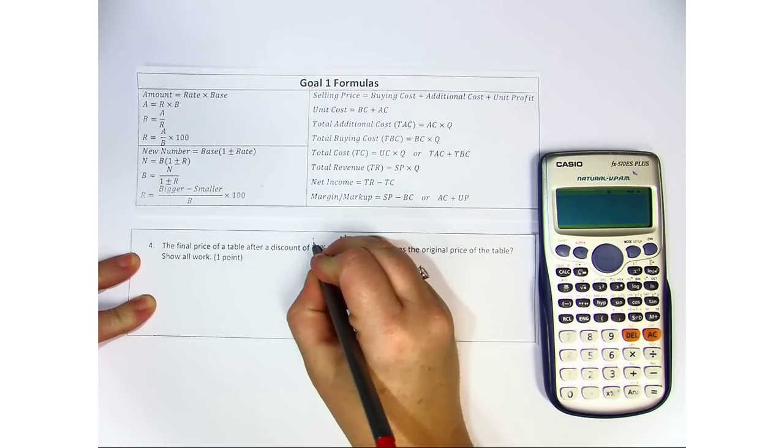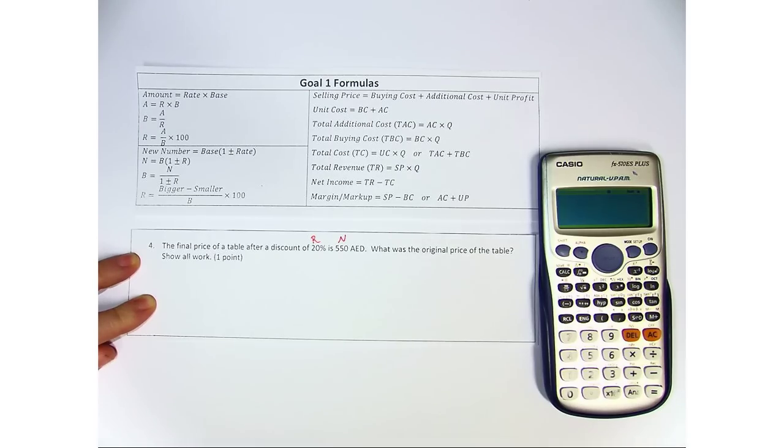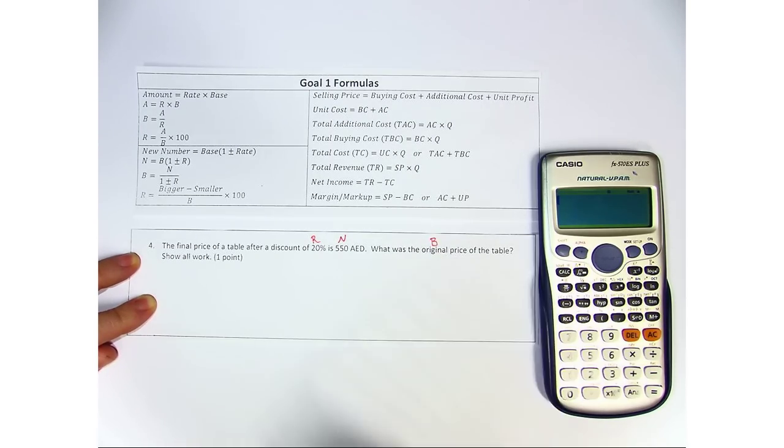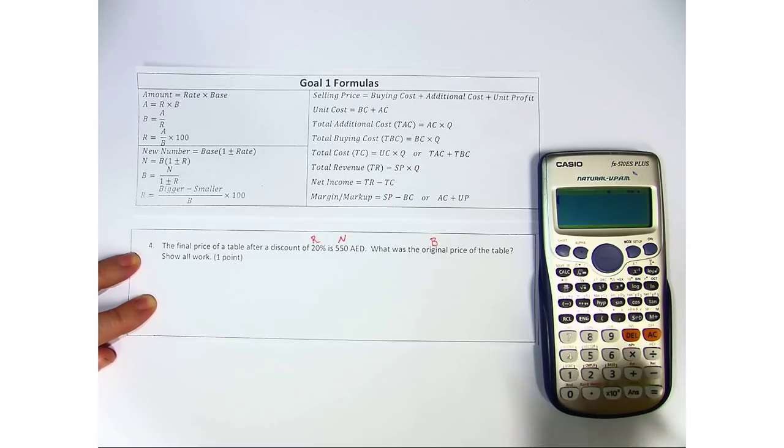The discount of 20%, that's easy. That is definitely our rate. What was the original price of the table? Well, original price we normally mark as B or our base price.